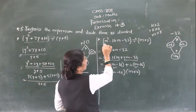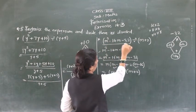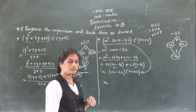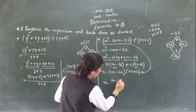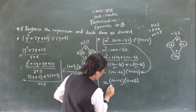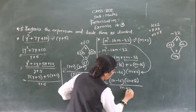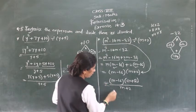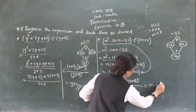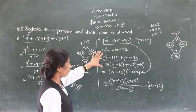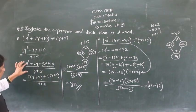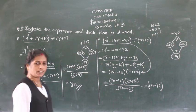So instead of n²-14n-32 we write (n-16)(n+2), divided by (n+2). So (n+2) gets cancelled. Final answer: (n-16). Means you can find these secret factors and then divide. With division, you can find factors and divide in this way.